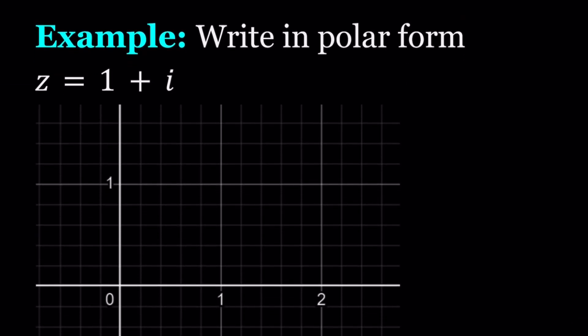First of all, we need to turn this by looking at the real and imaginary parts. We need to turn this into an ordered pair, which is going to be 1 comma 1 in this case. So it's pretty much the same thing as plotting 1 comma 1, which is going to appear here. And then I'm going to go ahead and connect it to the origin with a line segment.